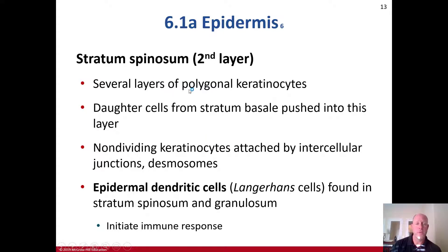The second layer, the stratum spinosum, contains several layers of polygonal keratinocytes — daughter cells from the stratum basale pushed upward toward the most superficial layer. These are non-dividing keratinocytes attached by intercellular junctions known as desmosomes. Epidermal dendritic cells, also called Langerhans cells, are first found here in the stratum spinosum and granulosum, and they initiate the immune response.